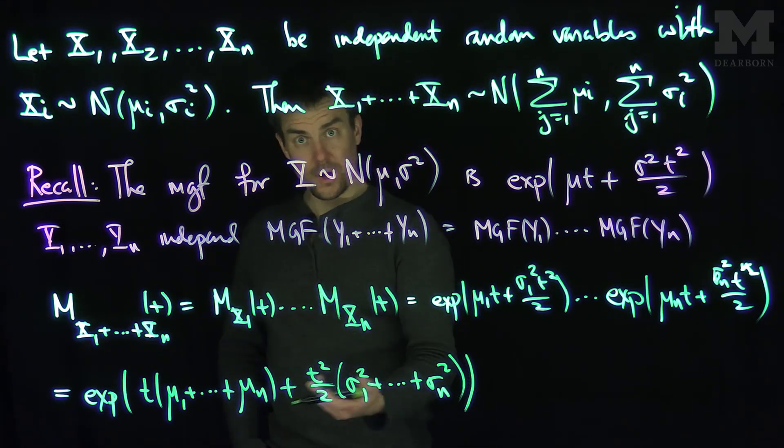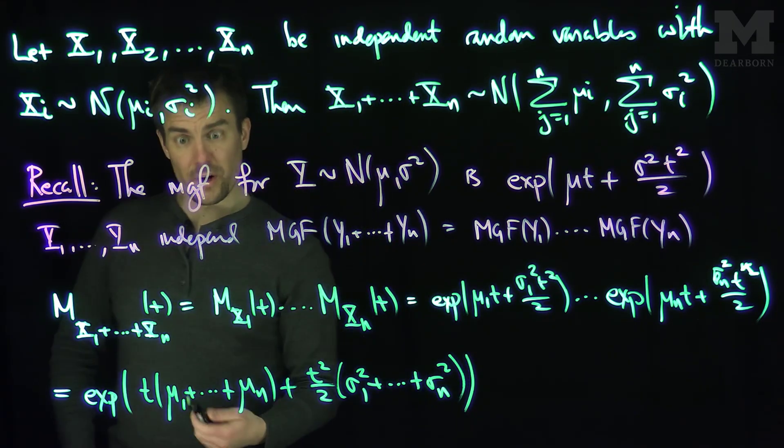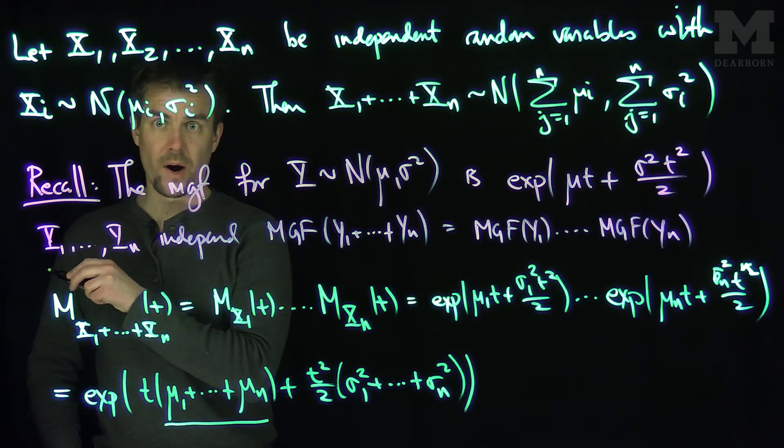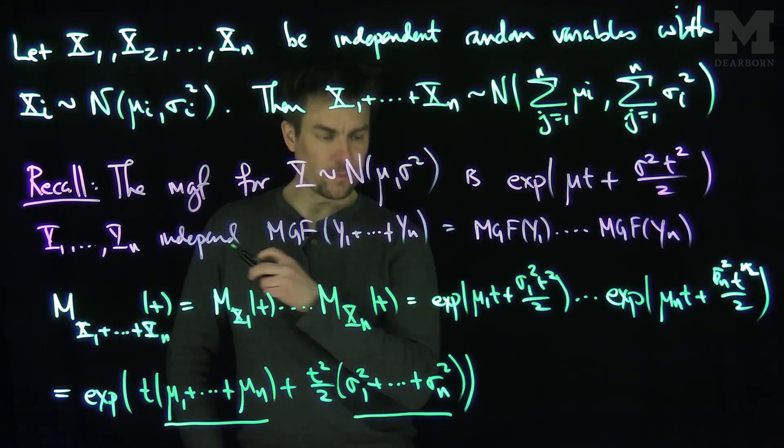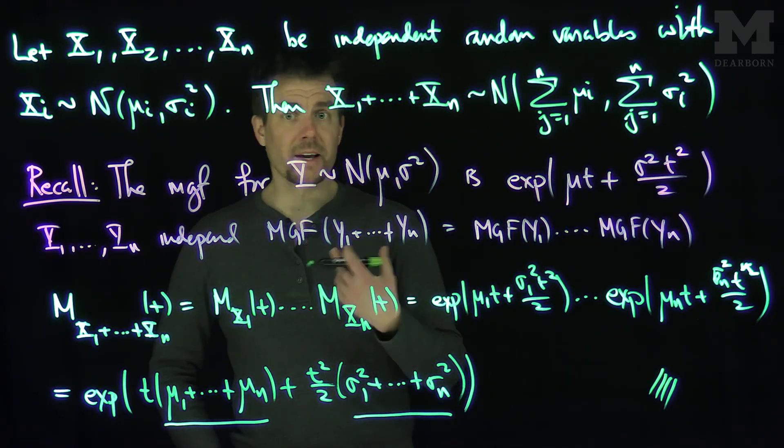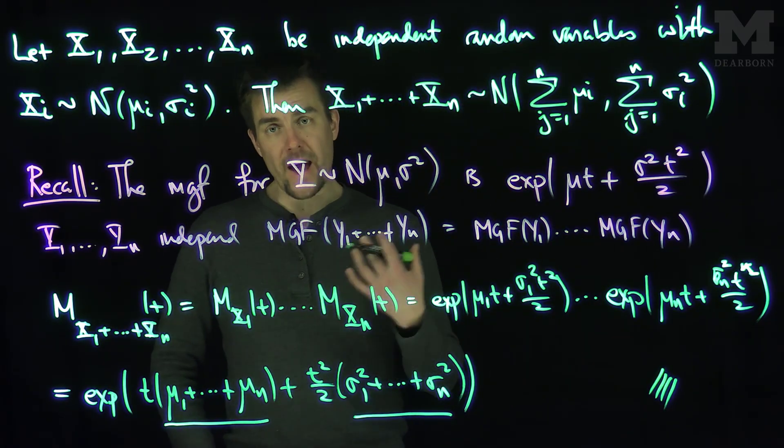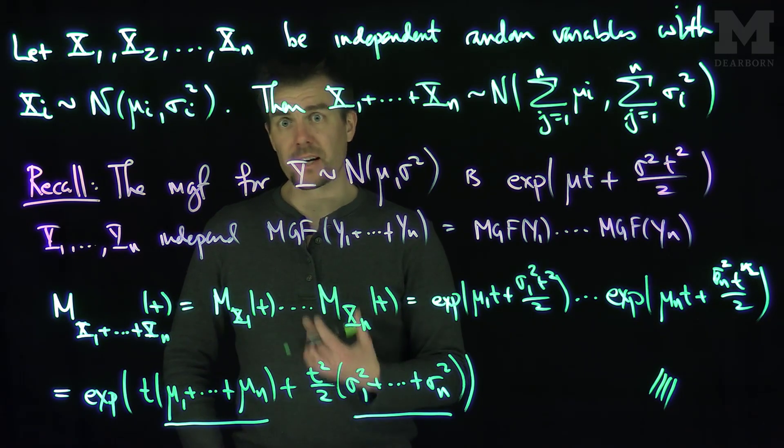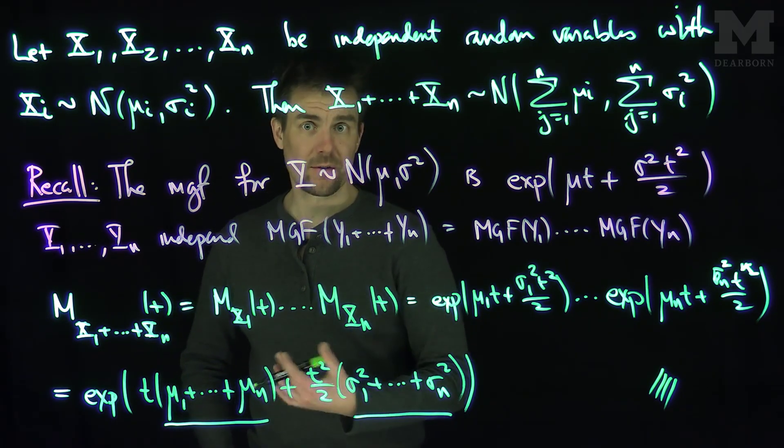And therefore, the conclusion is that this is the moment generating function of a normal random variable whose mean is the sum of these μᵢ's and whose variance is the sum of the σᵢ squared, and that proves the result. So we have the sum of independent normal random variables will again be a normal random variable where you add up the means and you add up the variances to find out what the mean and variance of the sum is. Thank you very much.